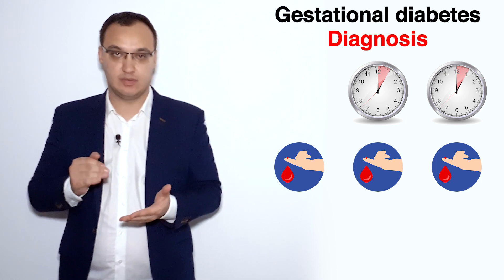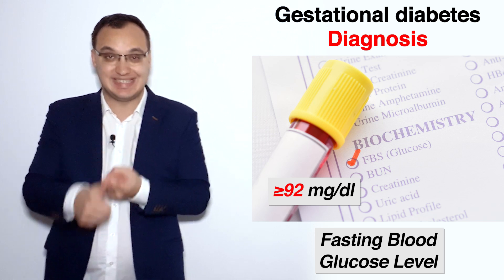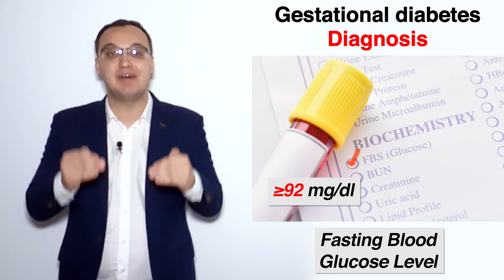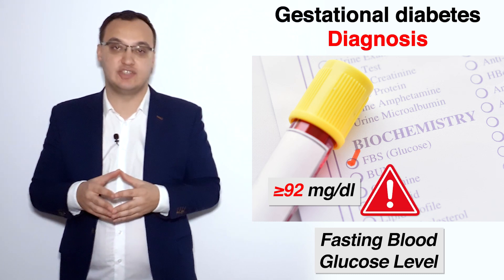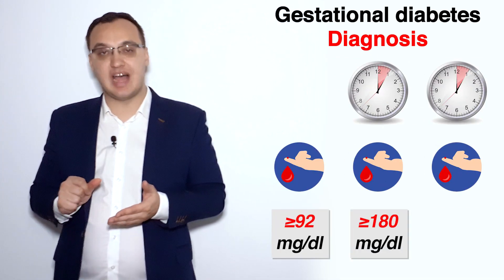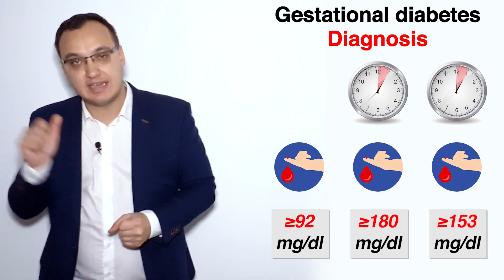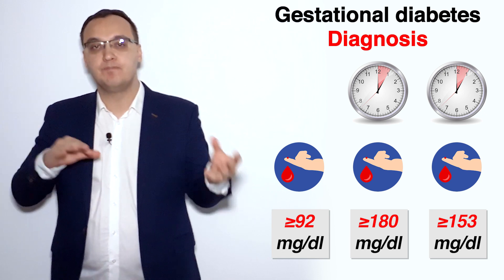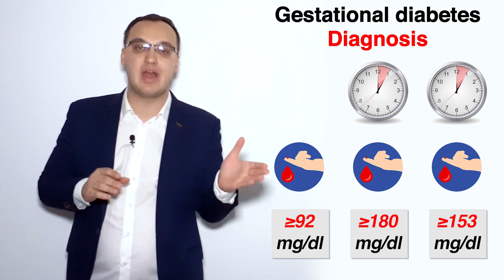There are cutoff values for this test. For fasting glucose, above 92 mg/dL indicates an increased risk of gestational diabetes. If the one-hour value is more than 180 mg/dL, that is also a sign. If the two-hour value is more than 153 mg/dL, that is also elevated.